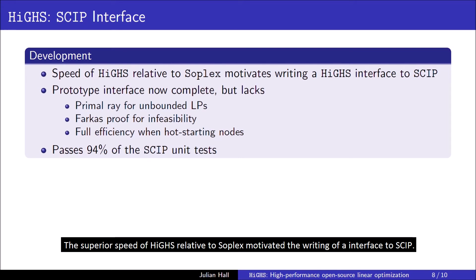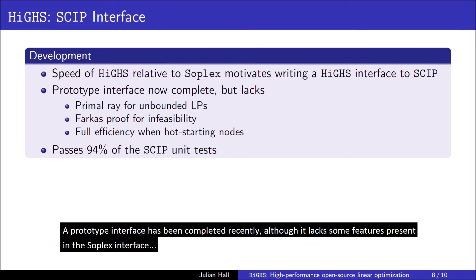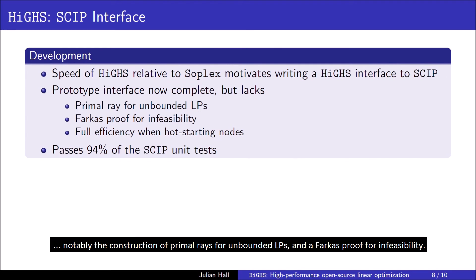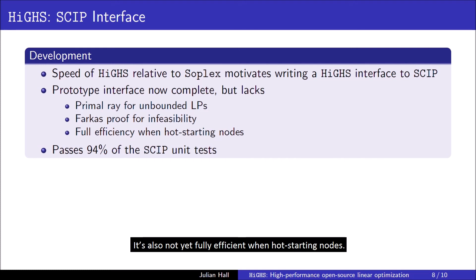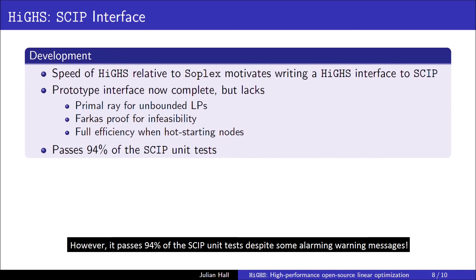The superior speed of HISE relative to SOPLEX motivated the writing of an interface to SCIP. A prototype interface has been completed recently, although it lacks some features present in the SOPLEX interface, notably the construction of primal rays for unbounded LPs and a Farkas proof for infeasibility. It's also not yet fully efficient when hot starting nodes. However, it passes 94% of the SCIP unit tests despite some alarming warning messages.